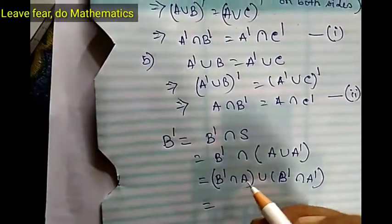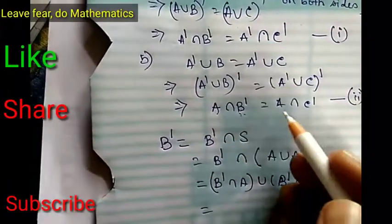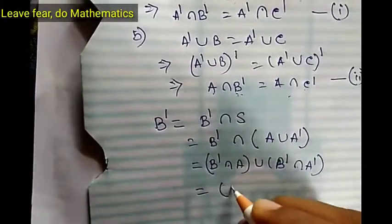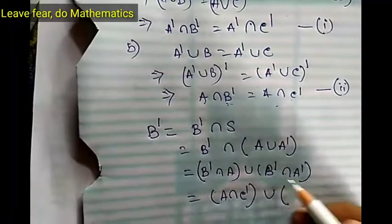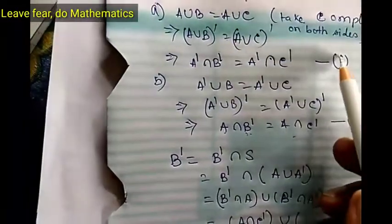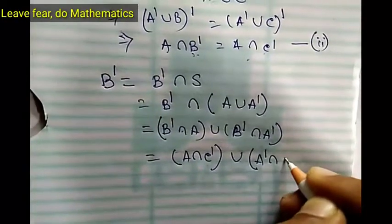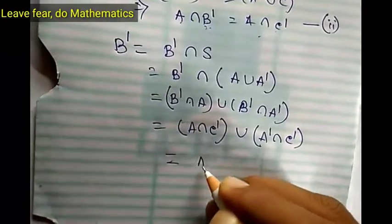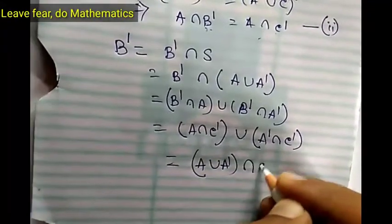Look at relation 2: B complement intersection A equals A intersection C complement. Write A intersection C complement in place of B complement intersection A, giving us (A intersection C complement) union (B complement intersection A complement). Now look at relation 1: B complement intersection A complement equals A complement intersection C complement. Write this in. Again by distributivity, we have (A union A complement) intersection C complement.